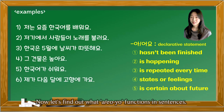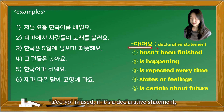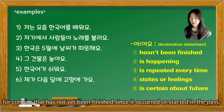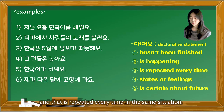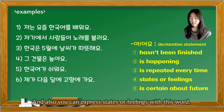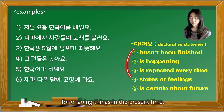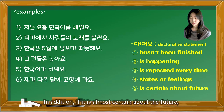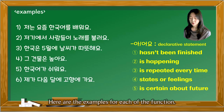Now let's find out what 아어요 functions in sentences. 아어요 is used for declarative statements about content that has not yet finished — since it occurred or started in the past — or that is happening at the right moment, or is repeated every time in the same situation. You can also express states or feelings with this word. Basically, it refers to the current tense for ongoing things. In addition, if something is almost certain about the future, the present tense 아어요 is also used.